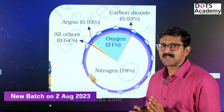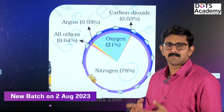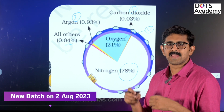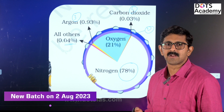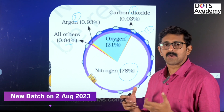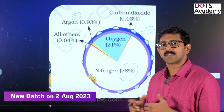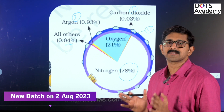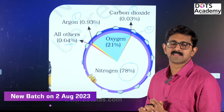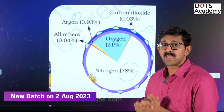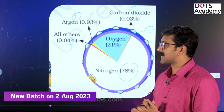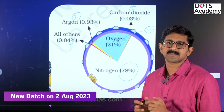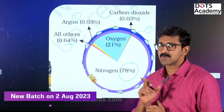There are a lot of gases in the atmosphere — nitrogen, helium, ozone, carbon dioxide, methane, and nitrous oxide. Nitrogen makes up 78% of the atmosphere.